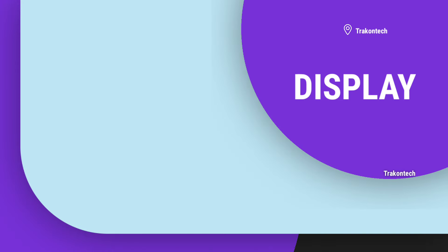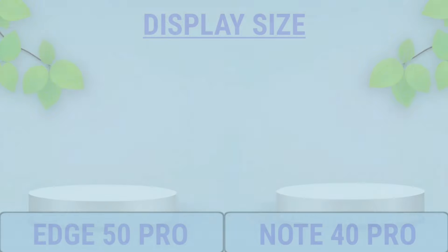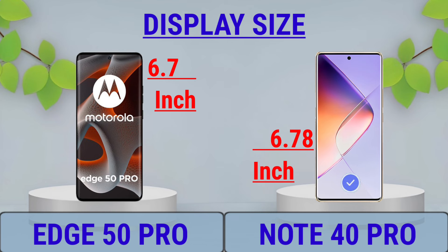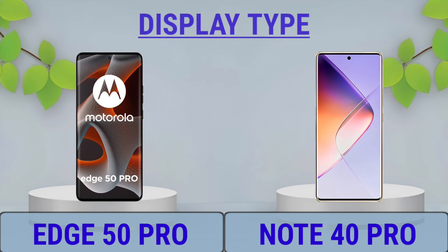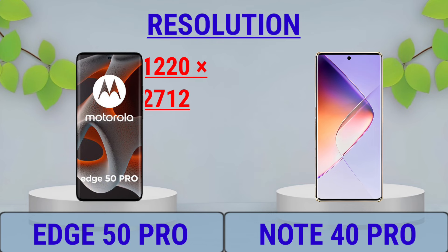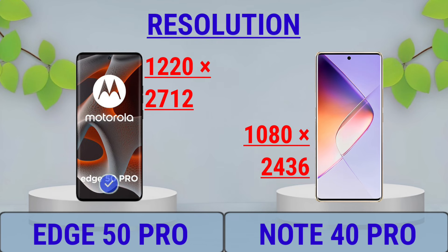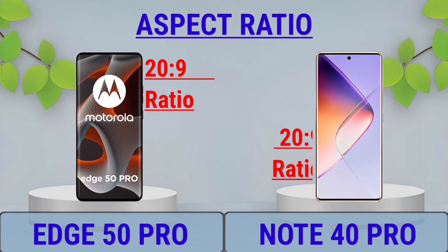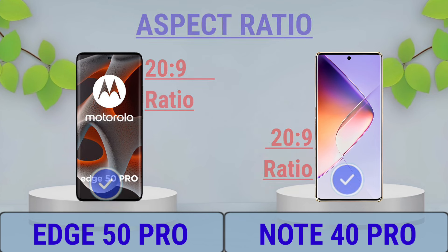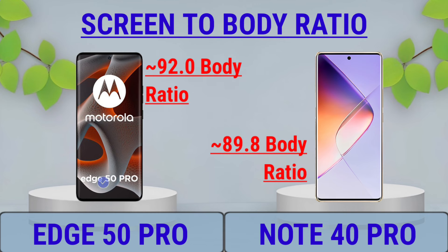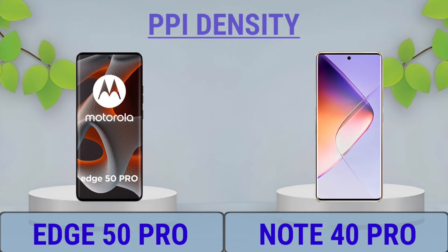Display: Display Size, Display Type, Display Resolution, Aspect Ratio, Screen to Body Ratio, PPI Density.